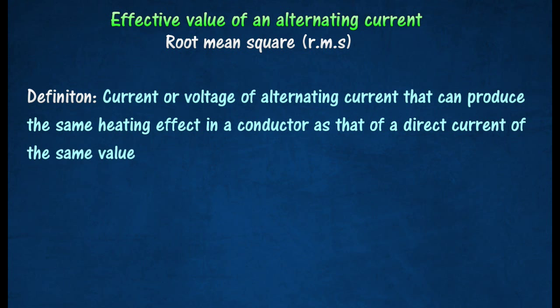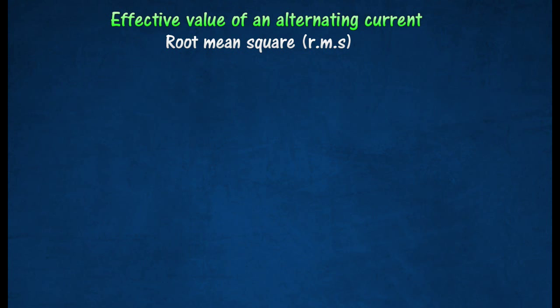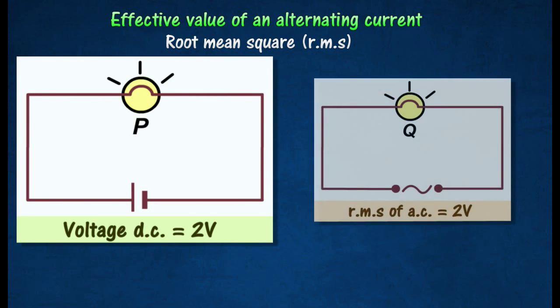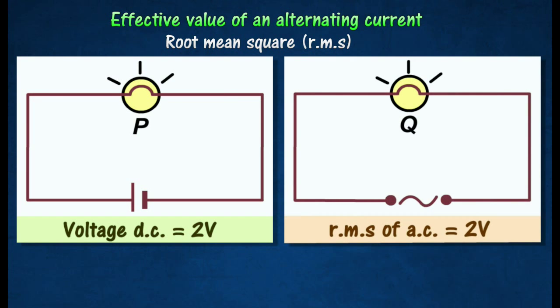Consider the two circuits shown below, P and Q, that are lit by a direct current and alternating current source respectively. If the voltage of the direct current is 2 volts and the root mean square value of the alternating current is also 2 volts...